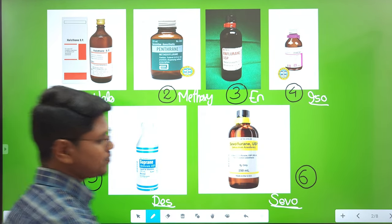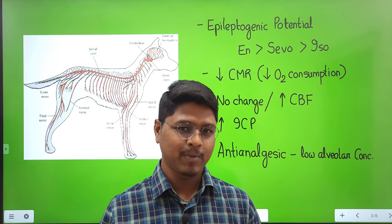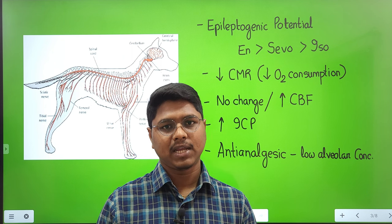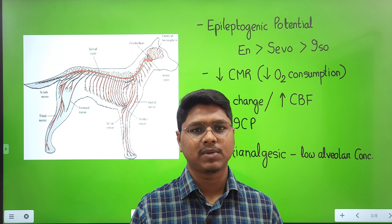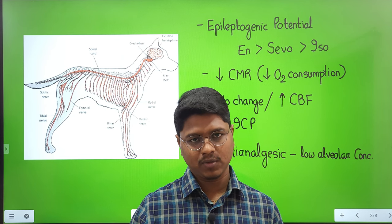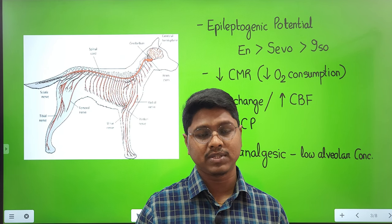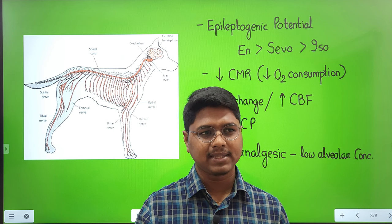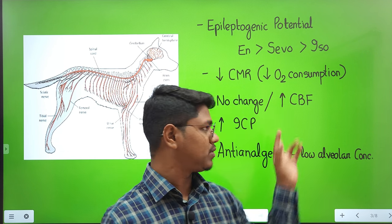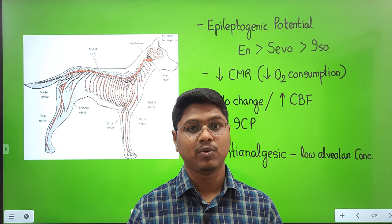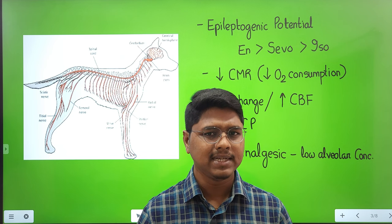Now the mechanism of action — there is no definitive or exact mechanism of action yet known for volatile anesthetics. However, when EEG studies (electroencephalogram) were conducted, it was found that inhalant anesthetics produce a silent EEG. By that, they are assuming it produces CNS depression. It also reduces oxygen consumption, and when there is hypoxia, the brain will enter into a sleep-like state. Most importantly, it produces a silent EEG.